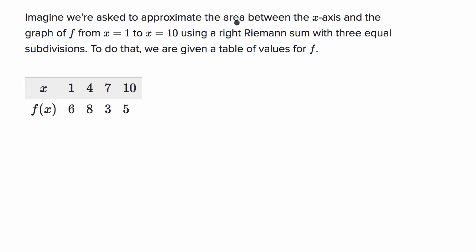Imagine we're asked to approximate the area between the x-axis and the graph of f from x equals one to x equals 10, using a right Riemann sum with three equal subdivisions.